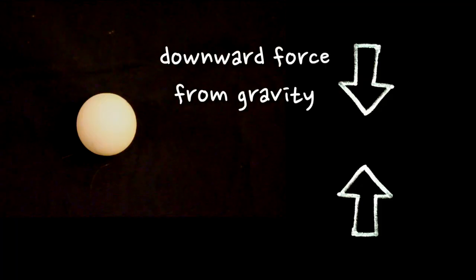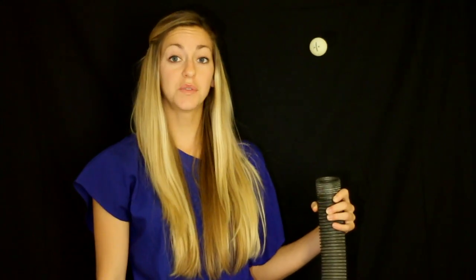When the air reaches the ball it pushes upward balancing the downward force of gravity. The ball is balanced up and down but why doesn't it move side to side? In fact we can tilt the stream and the ball doesn't fall.